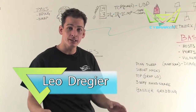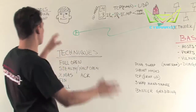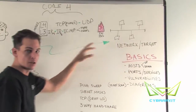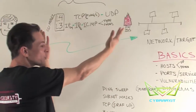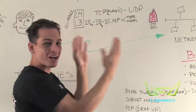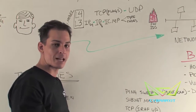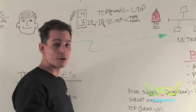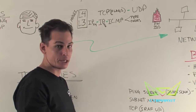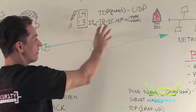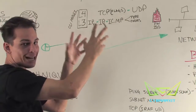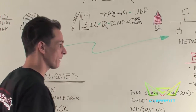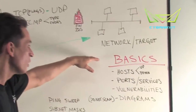Let's look at the theory of scanning. You're the source and your destination is some sort of network or target. The tools and protocols available between you and your target are what I call the 'core four': TCP and UDP at layer four of the OSI model, and IP and ICMP at layer three. We're going to take apart these protocols, flags, and configuration options — that makes up the whole theory of scanning.